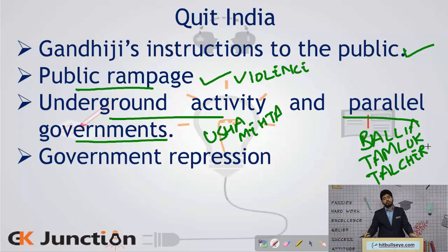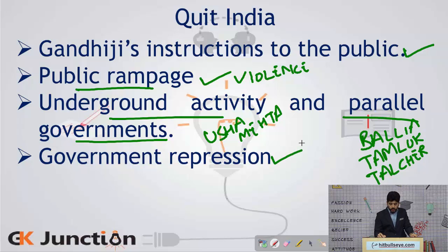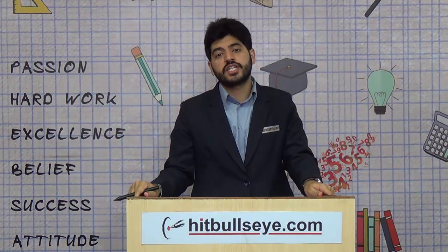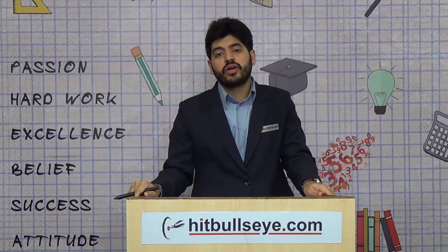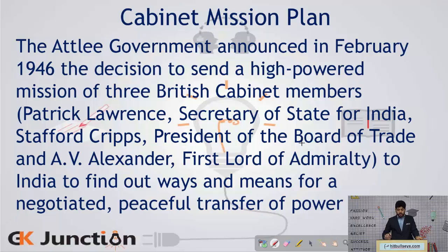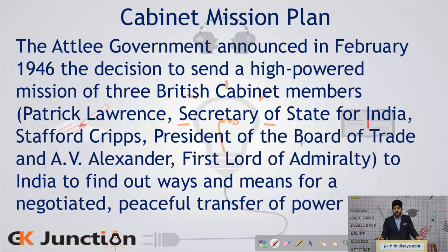Lastly, the government repression during the Quit India Movement was at its highest extent — around 10,000 people were killed and the press was gagged to a very high extent. Sensing the mood from the Quit India Movement, the government took up the demands of the people of India and sent a Cabinet Mission Plan to India.